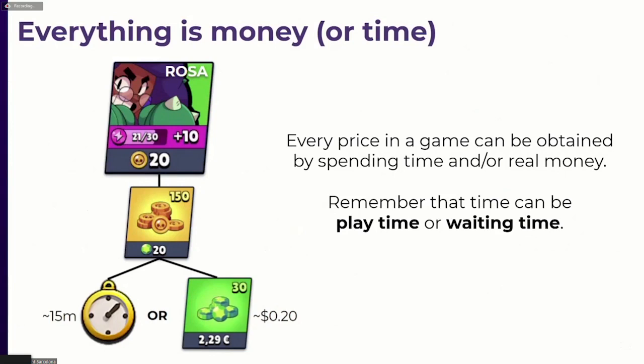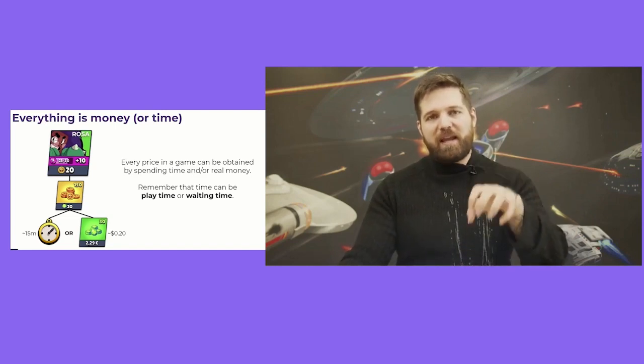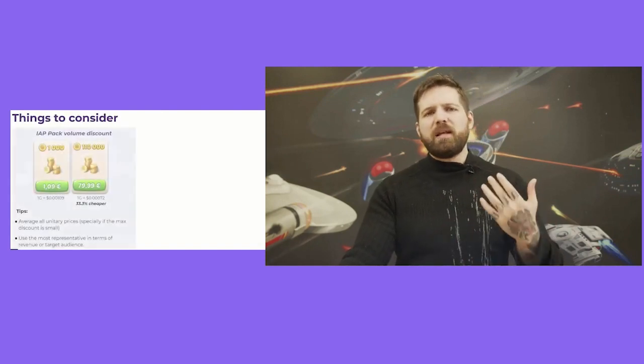The second step is establishing an equivalence between different game resources — real money and time. Everything in free-to-play games is payable either with money or with time. An important distinction: time can be active playing time — time you actually spend playing — or waiting time, like in strategy games where the game collects resources while you're doing something else. That's an important consideration because the amount of time you'll demand from the player will be completely different in each case.